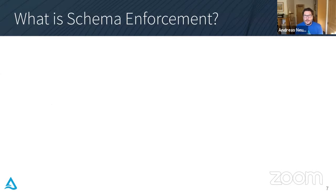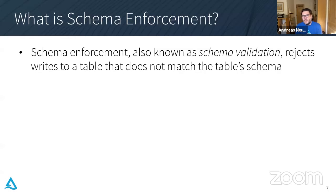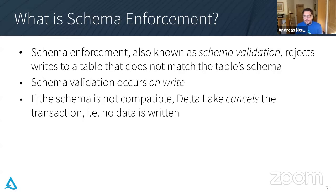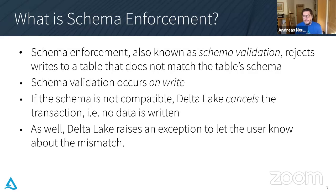So knowing what a schema is, let's talk about what schema enforcement is. Schema enforcement, also known as schema validation, rejects any writes to a table that do not match the table schema. It happens on write — anytime you write, overwrite, or append to a table, schema enforcement is applied. If the schema of the data you're writing is not compatible with the table schema, Delta Lake will cancel the transaction. No data is written — it's atomic, so either your entire transaction goes through or it gets canceled. Delta Lake will throw an exception and your job will fail, so you know there was a mismatch.